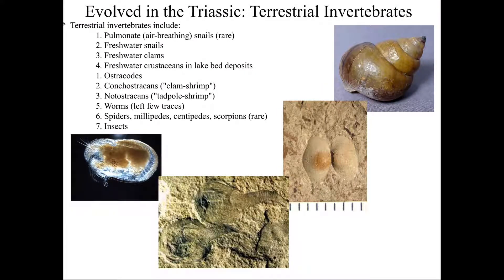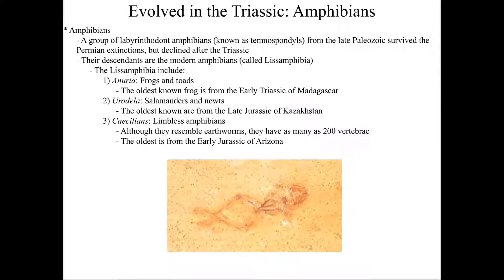We start to see some terrestrial invertebrates come around. Most of these things we've talked about before, but in the oceans. Now we're going to see some air-breathing snails — which if you've ever had a garden, you are definitely greatly annoyed by them. We can see freshwater snails, freshwater clams, crustaceans, ostracodes, and lots of worms. We're also going to see some spiders, millipedes, and centipedes. Of course these things aren't going to be as common as they were in the Paleozoic, but they are definitely still here and still kicking.